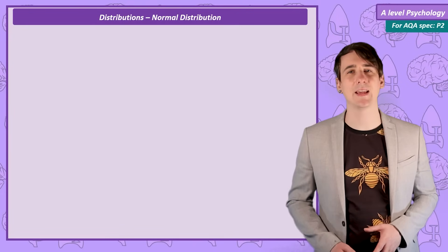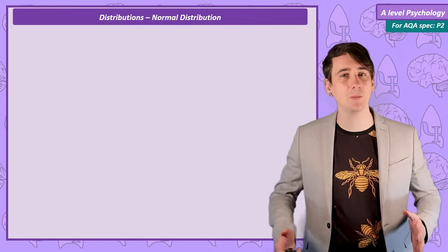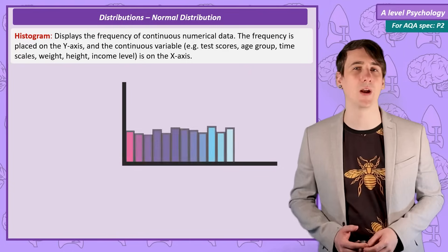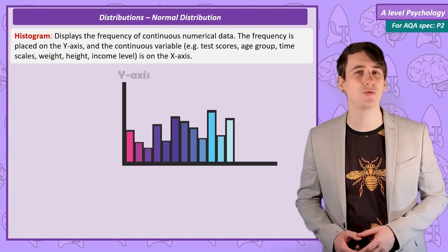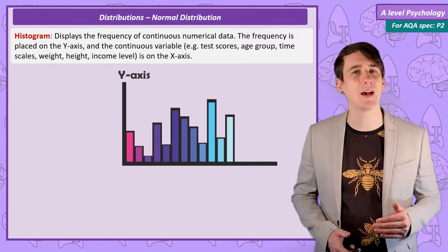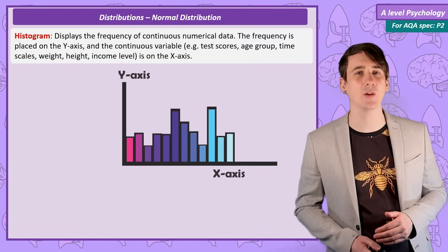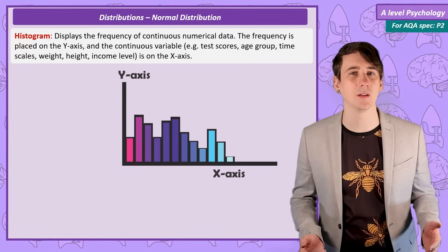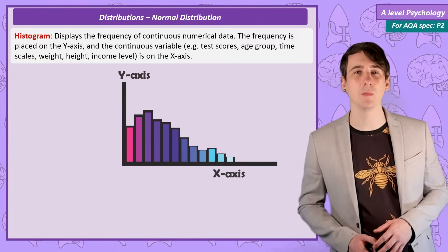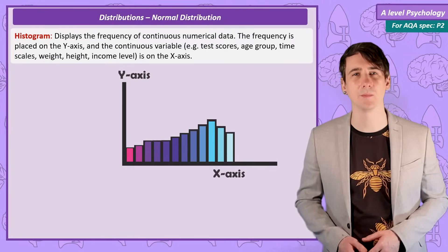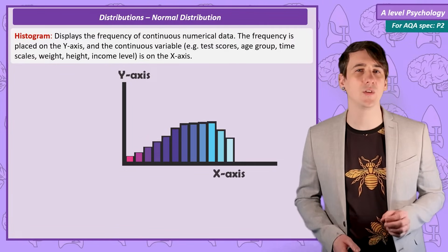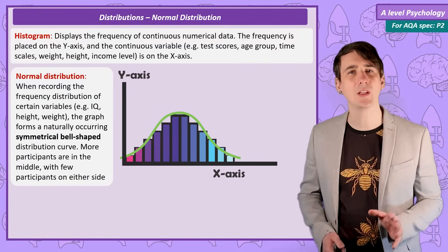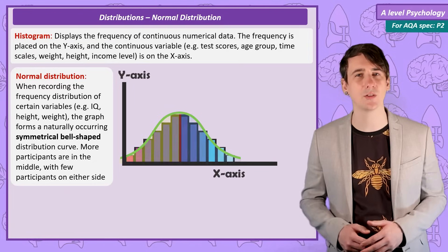After collecting data about the frequency of some continuous factor, it can be displayed on a graph showing its frequency. This is known as a histogram, with the y-axis representing frequency and the x-axis showing the value of the scores. Sometimes the spread of scores can show no pattern, but sometimes scores can be more concentrated on one side or the other. Sets of data that show this distinctive bell curve are what's known as a normal distribution.